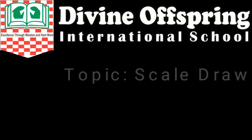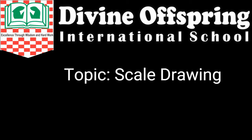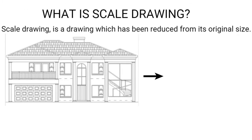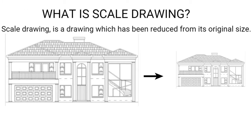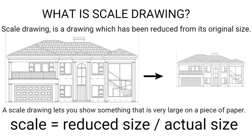Good day everyone. Today in mathematics we'll be looking at the topic of scale drawing. A scale drawing is a drawing which has been reduced from its original size. A scale drawing lets you show something that is very large on a piece of paper. The scale is equal to the reduced size divided by the actual size. From this diagram, you can see a house being reduced to a smaller house on a sheet of paper.